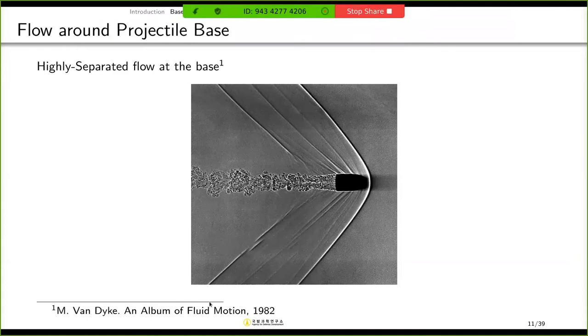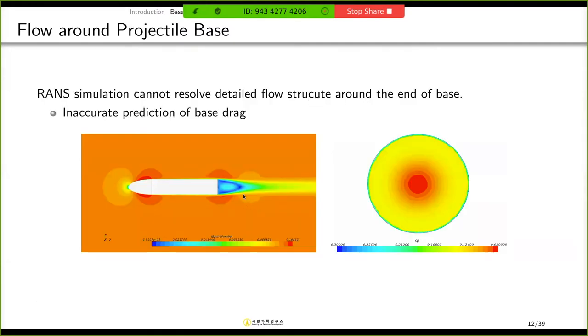This is subsonic projectile. As you can see here, there is a detailed vortical structure in wake region. When I saw this flow in RANS simulation, we cannot capture detailed vortical structure. And this is the pressure contour at base surface. And as you can see here, there is a radial distribution in pressure. So pressure is high in the center of the base and it becomes lower.